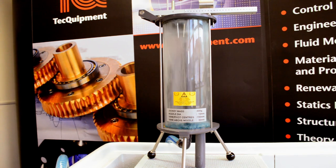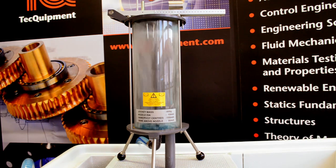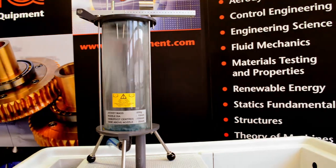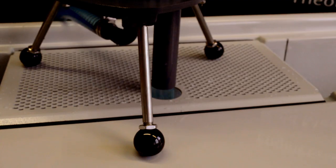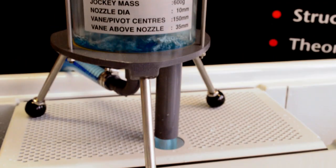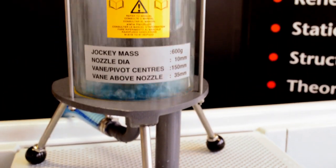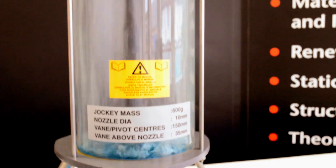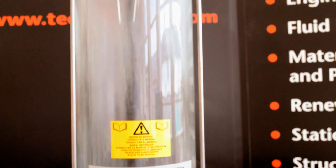Techquipment's impact of a jet demonstrates how to produce mechanical work from fluid under pressure, using the pressure to accelerate the fluid to a high velocity in a jet. When directed onto the vanes of a turbine wheel, the force of the jet rotates the turbine.